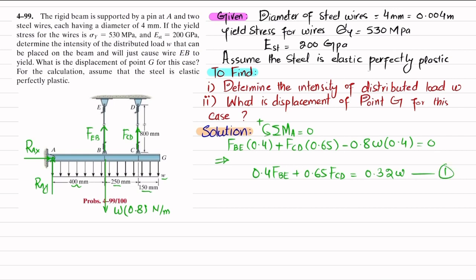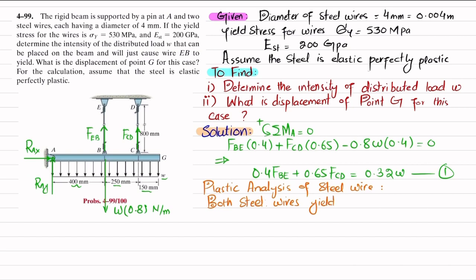We cannot apply any other equilibrium equation to get the required answer, so we will perform plastic analysis of the steel wires. Plastic analysis means the force produces yielding — the wire deforms permanently. We assume both steel wires yield. The yield stress is given as 530 megapascals.